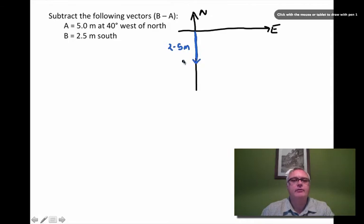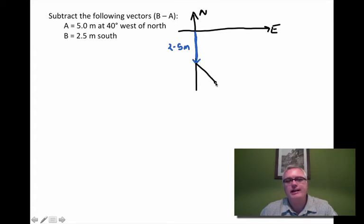And to this vector, I want to add vector negative A. So normally when I draw A, I would draw A at 40 degrees west of north. So I would go off in this direction. Right? 40 degrees towards west from north. But 180 degrees opposite to that is vector negative A. So I'm going to add negative A in this direction. So 5 meters in length. And it makes an angle of 40 degrees here. And this is 5 meters.